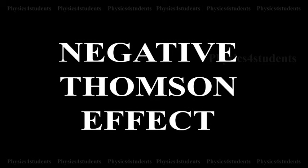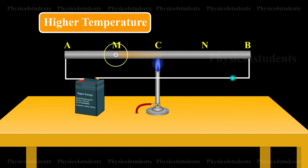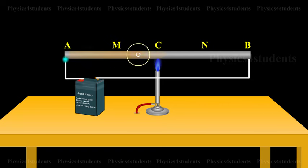Negative Thomson Effect. In the case of iron, when it is heated at the point C and current is flowing from A to B, M shows higher temperature as compared to N.